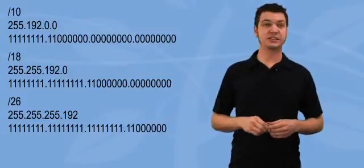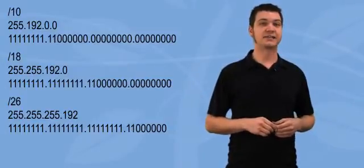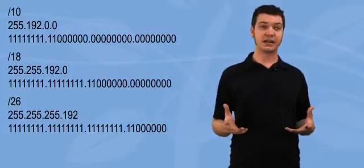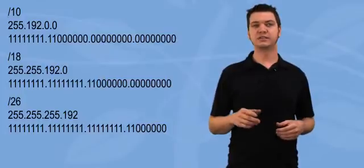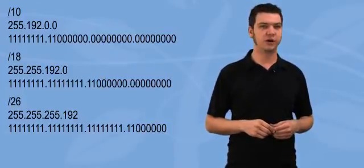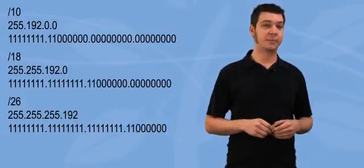Now if you look at the example with slash 10, slash 18, and slash 26, you'll see that again, the next bit in each mask has changed from a 0 to a 1. Each time you change the adjacent 0 to a 1, you increase the number of subnets by a power of 2.